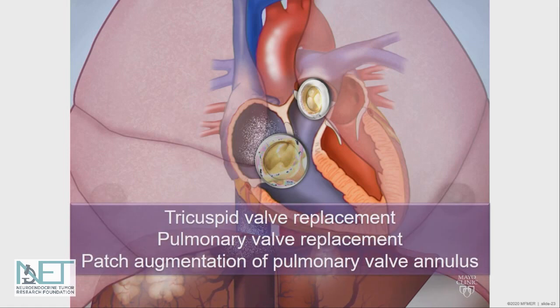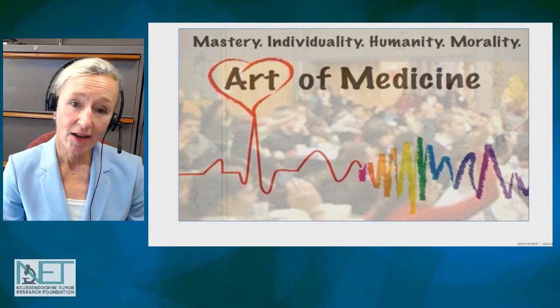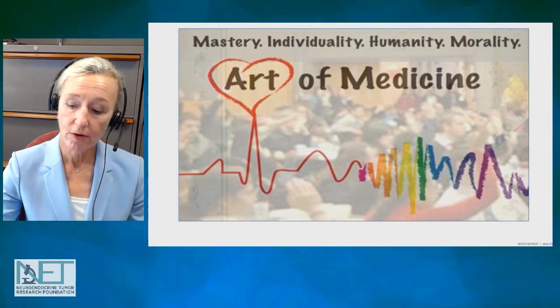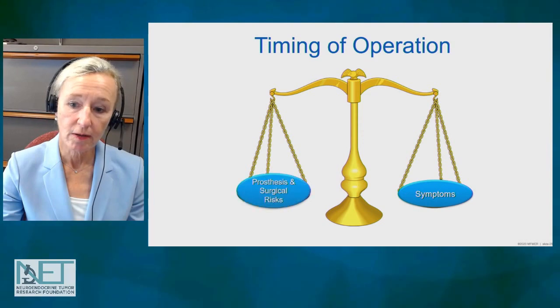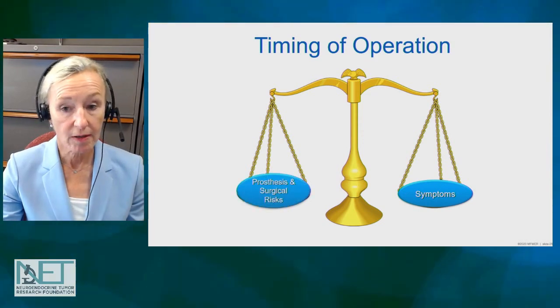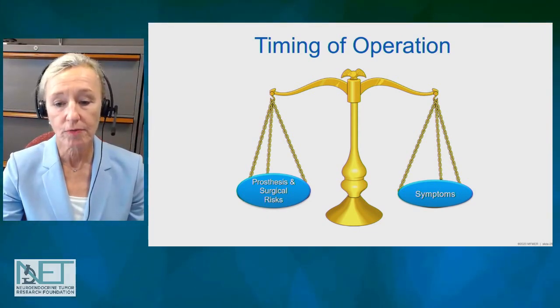Here you see two valves replaced, which would be a typical standard type of treatment in patients that we see. The art of medicine is determining when is the best time to perform valve replacement in patients who have carcinoid heart disease. That's something we're still refining, because we want to balance the time of operation and alleviate symptoms, but recognize that there are surgical risks. And then, of course, we start the clock on a new valve and how long will that new valve last?